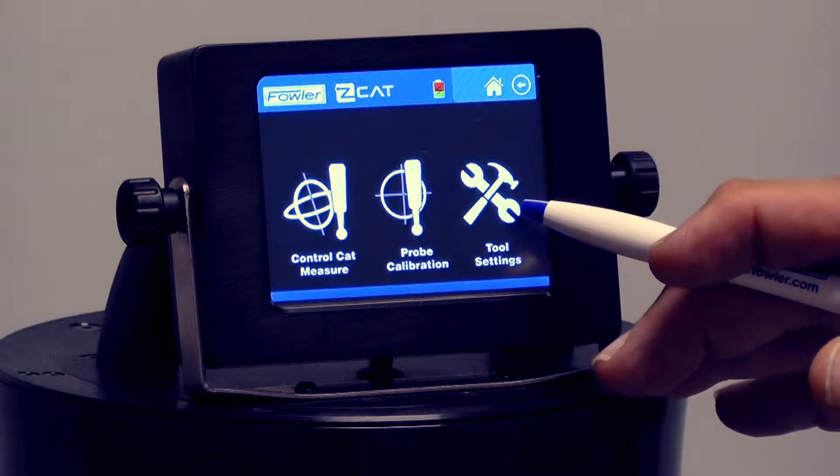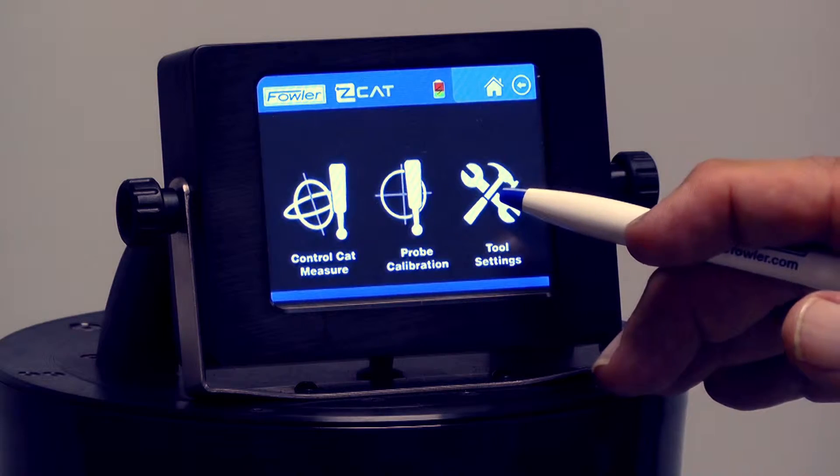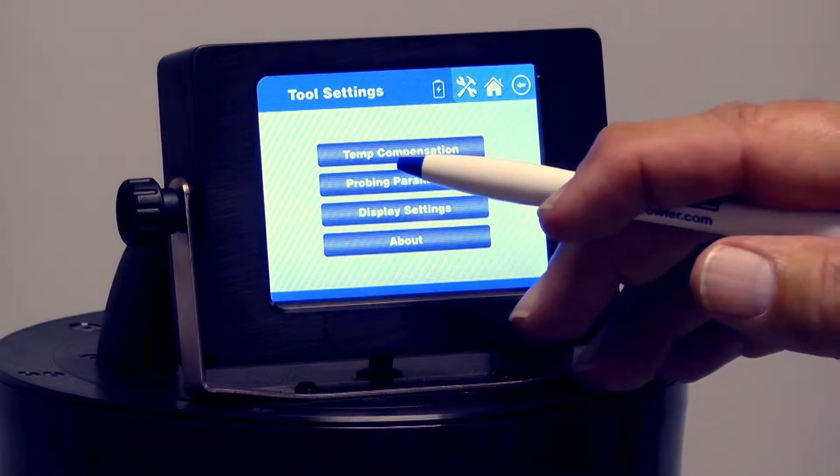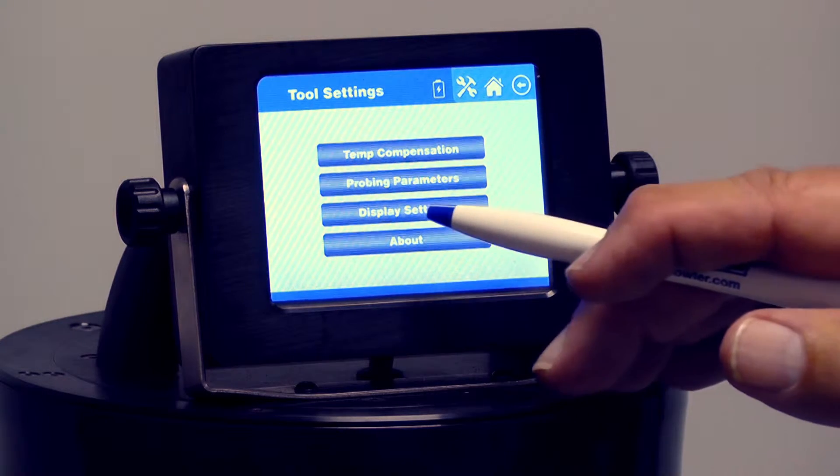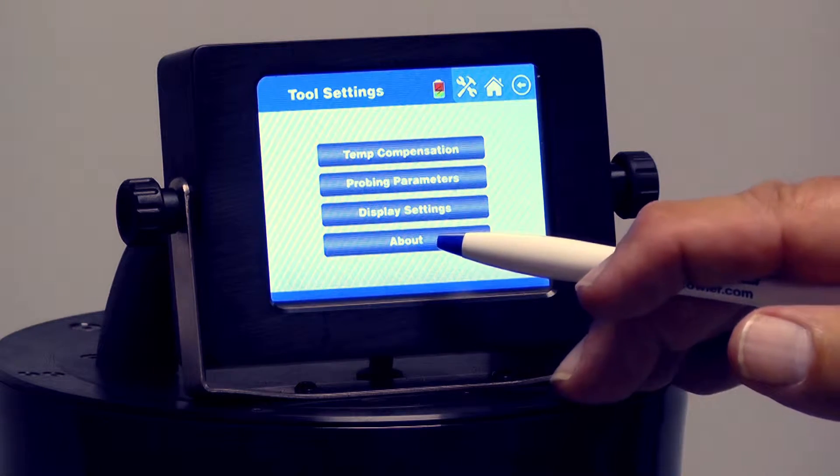Tool settings is something you won't get into very often at all, but if I just touch on the screen, you'll see I've got options of temperature compensation, probing parameters, display settings, and about.